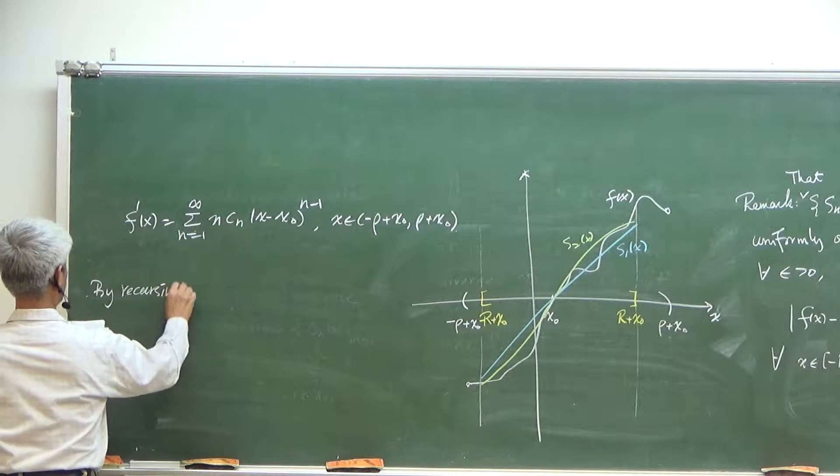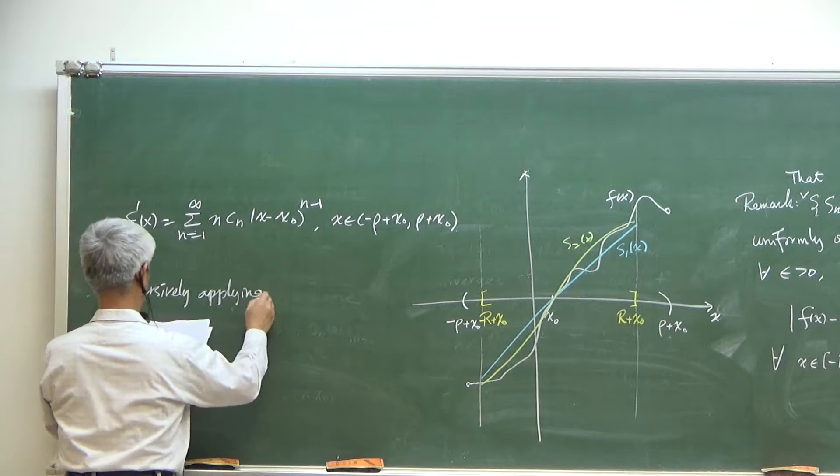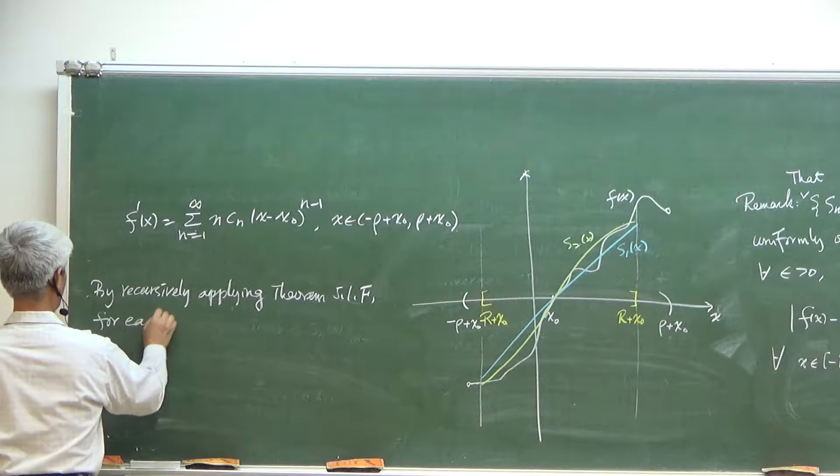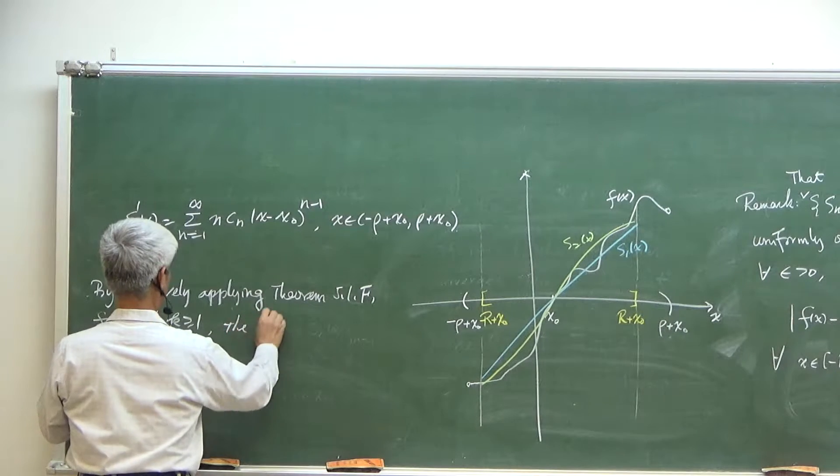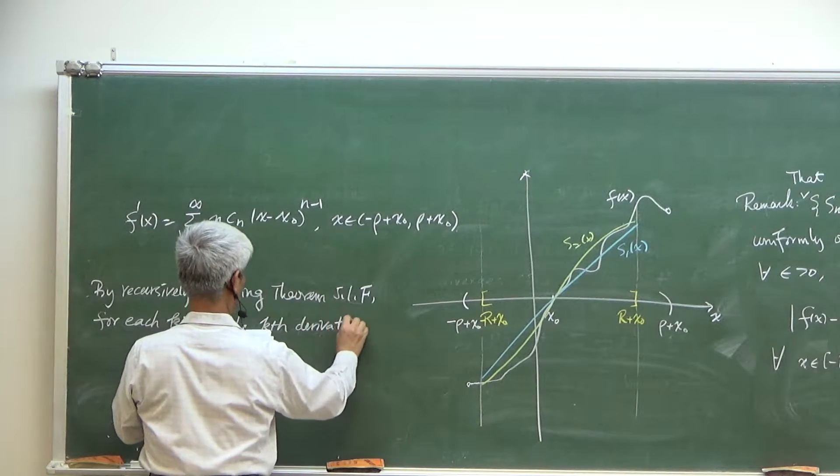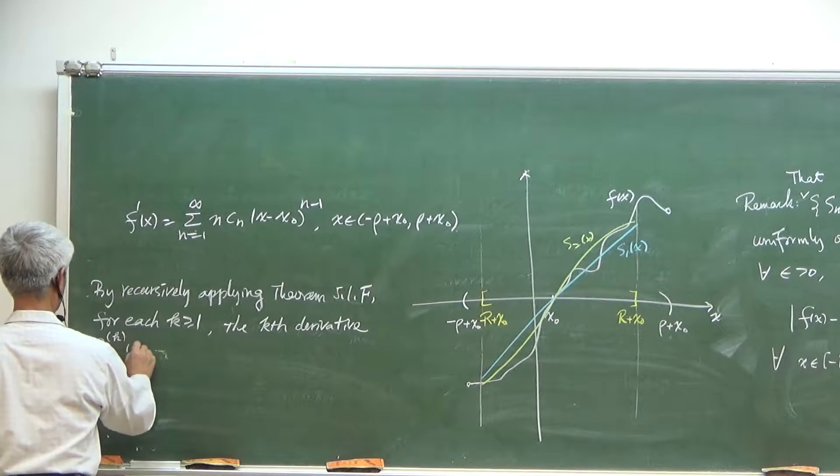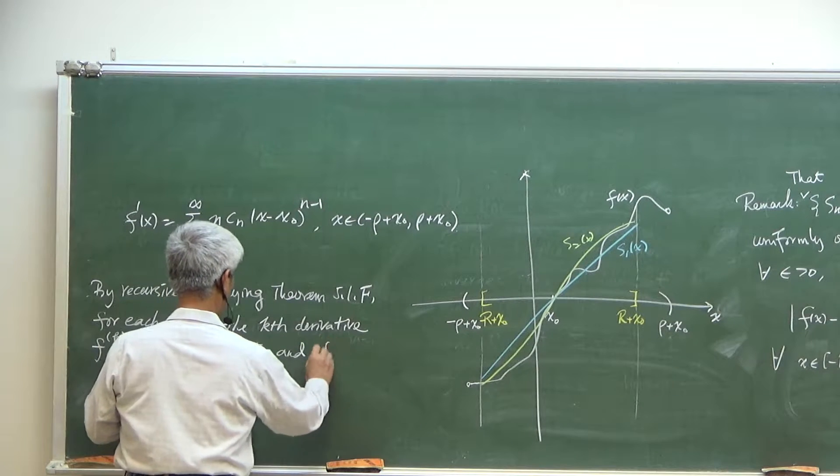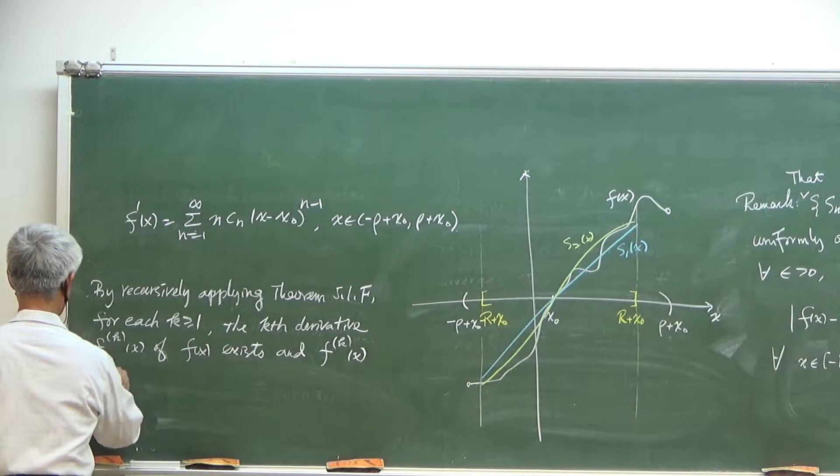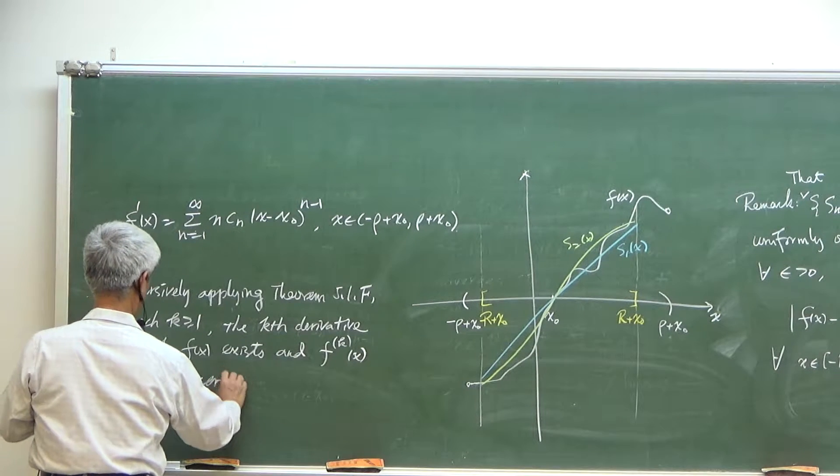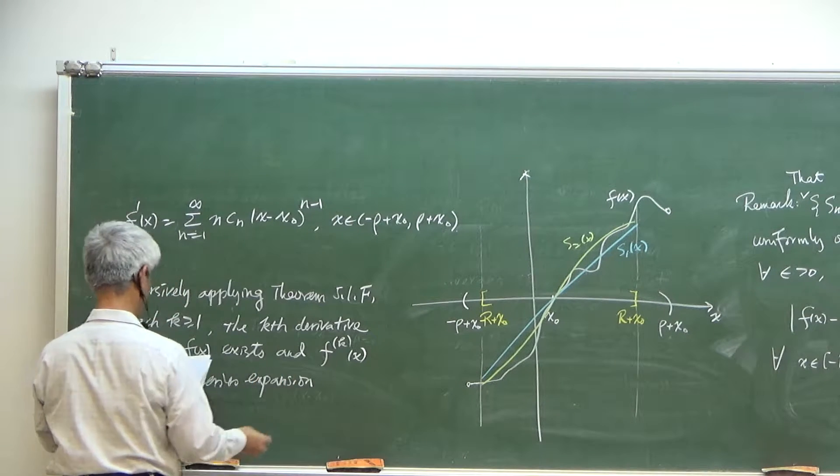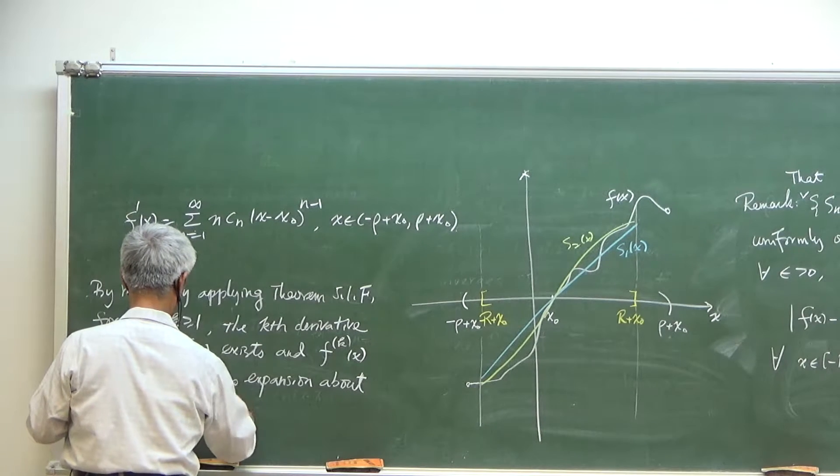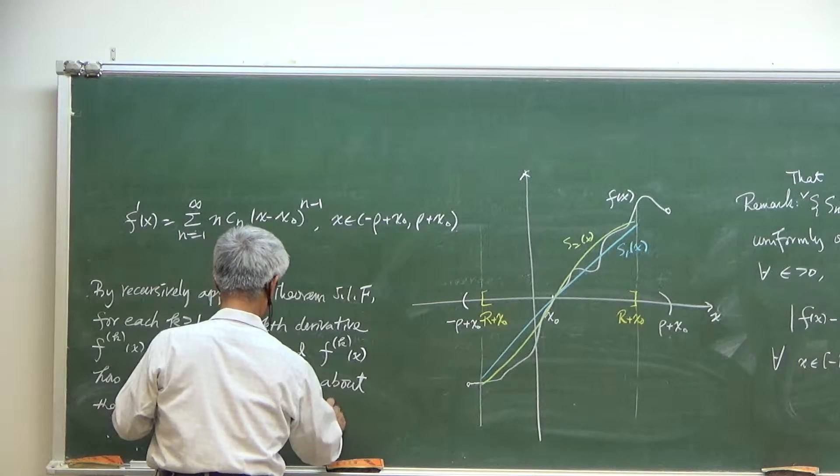So by recursively applying theorem 1.1.8 for each k greater than or equal to 1, the k-th derivative of f of x exists and f to the k-th derivative has a power series extension about the same point with the same ROC.